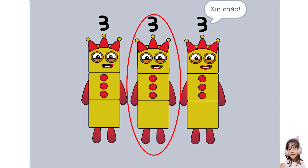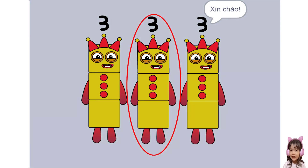If you said three number two, you are correct, because one of the blocks is not rounded.